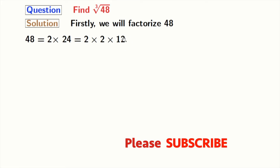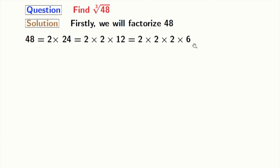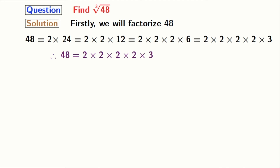To factorize 12, we say that 2 times 6 is equal to 12. We all know that 6 is equal to 2 times 3. So we take it, and finally 48 turns as 2 times 2 times 2 times 2 times 3.